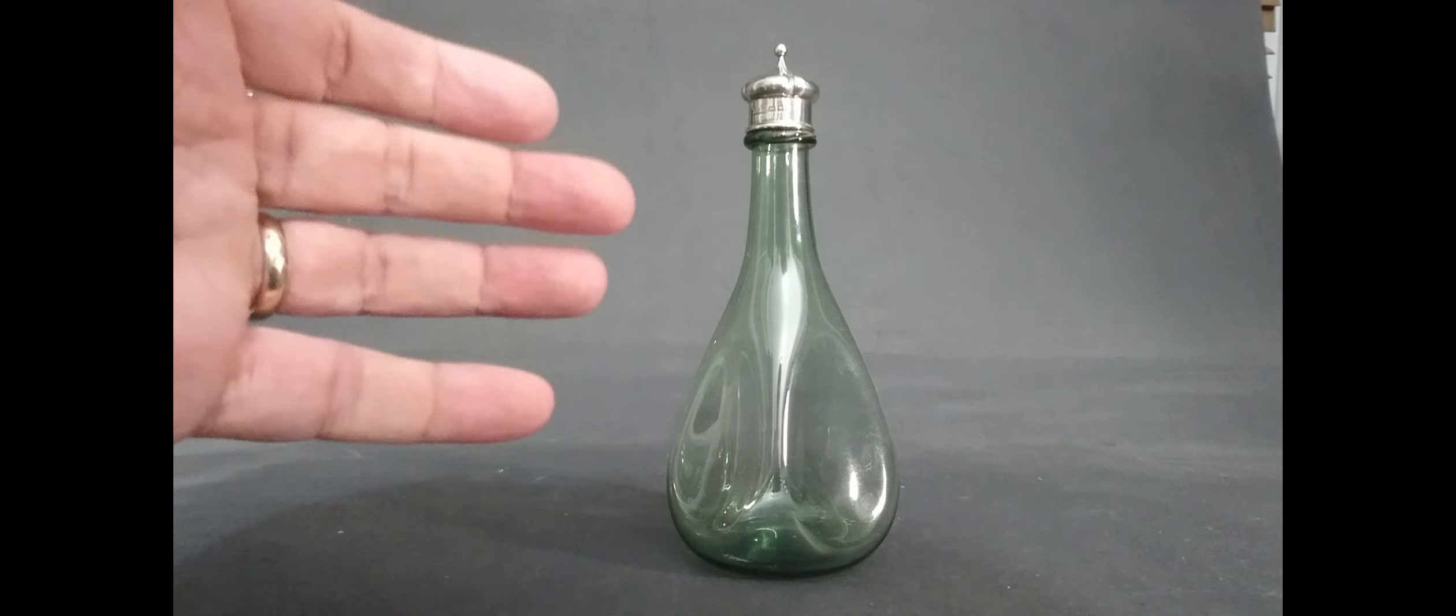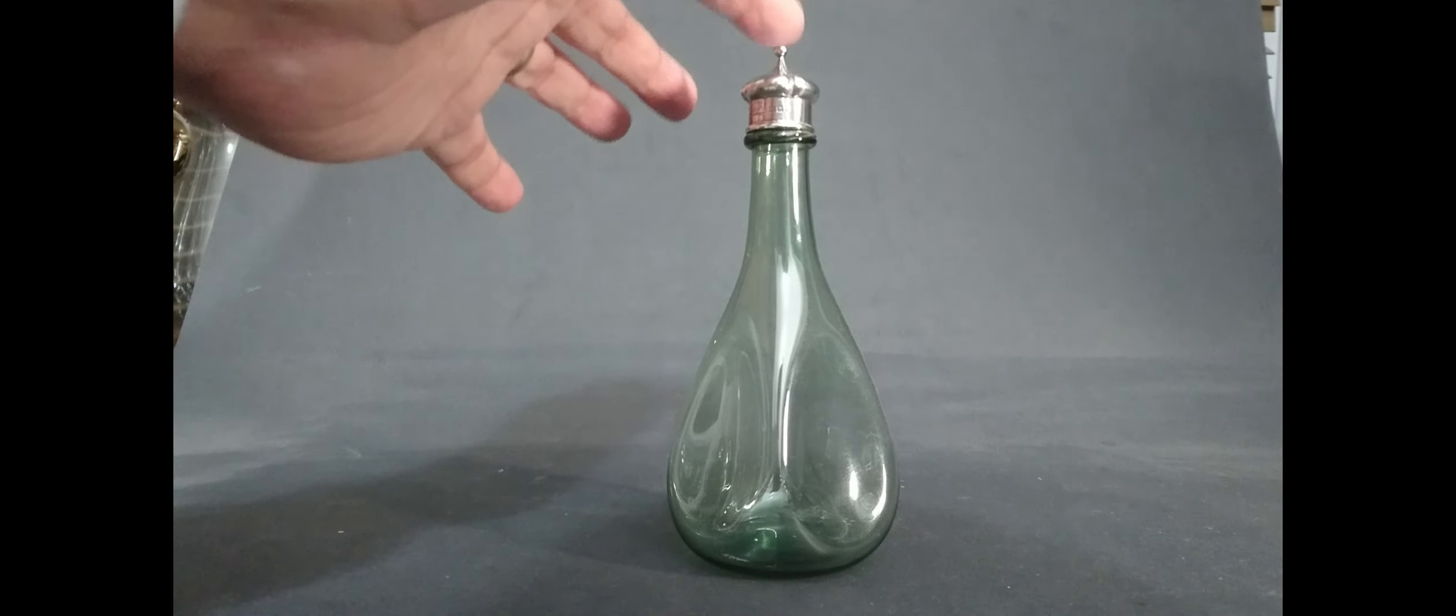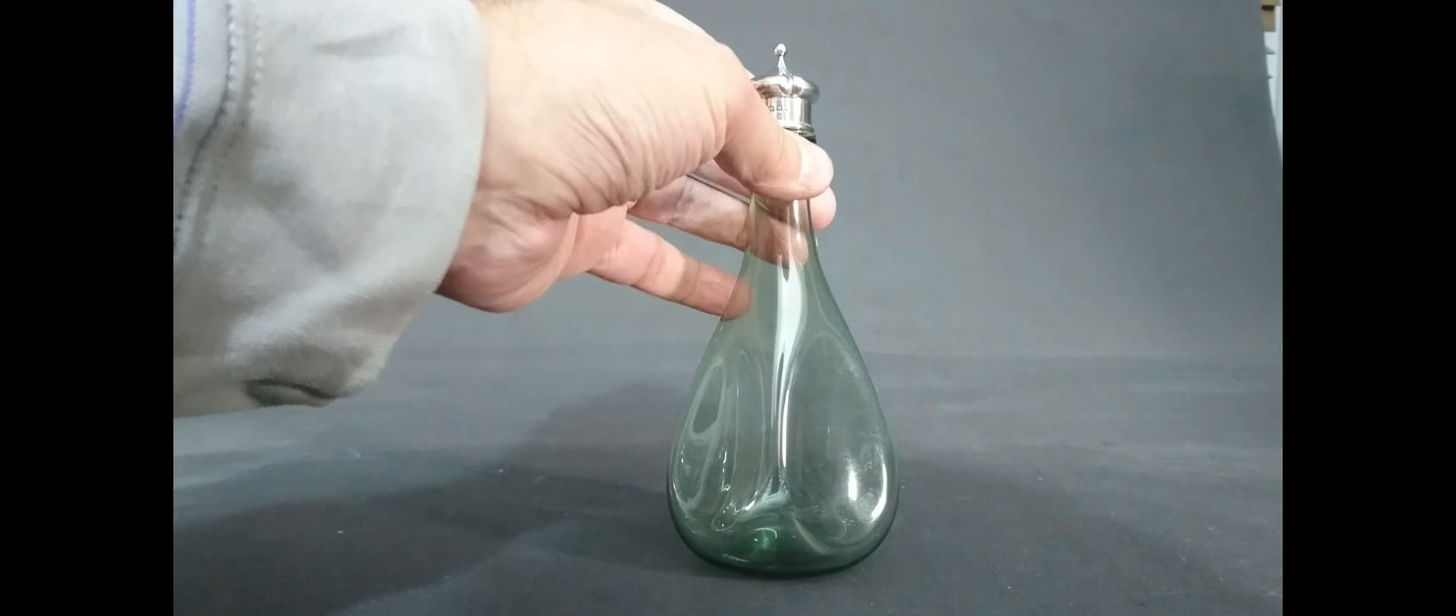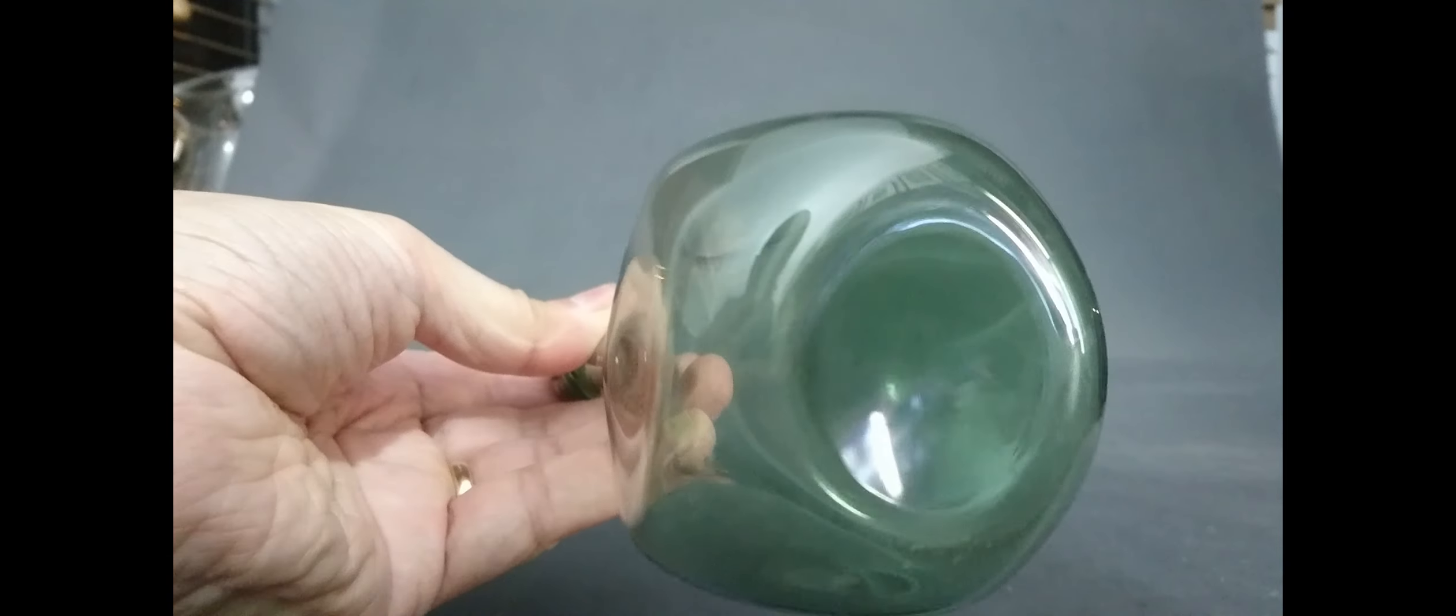So with that said let's get on and look at the first piece. This is my cheat in a way in that according to the Whitefriars book, the Leslie Jackson book, they say there's a bottle like this and they say it's 1880s but this has got a hallmark top which says 1907. So based on the top I'm allowing it in. This is like a little perfume bottle or something like that, it's got a little punt on it.